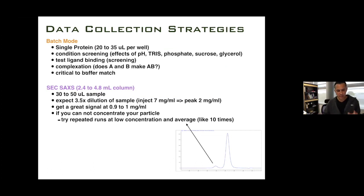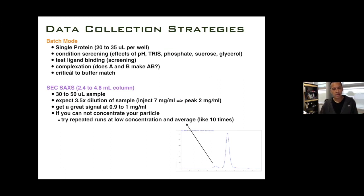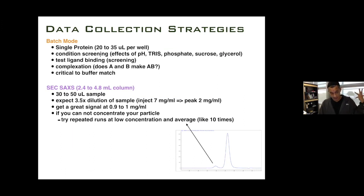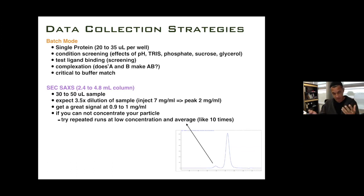The two kinds of data collection we process with Scatter are batch mode experiments, where you prepare samples in a plate and manually load them into a cuvette with typical sample volumes of 20 to 35 microliters per well. This is good for condition screening — looking at a variety of different pHs, different buffers, additives like sucrose and glycerol, ligand screening, or asking whether protein A mixed with protein B forms a complex.